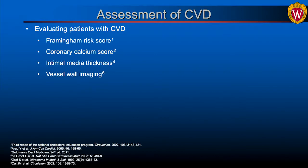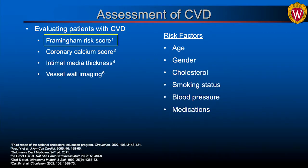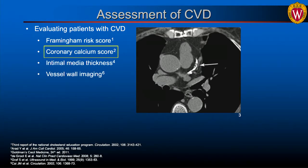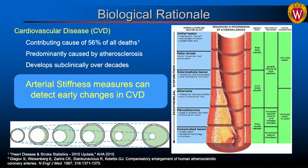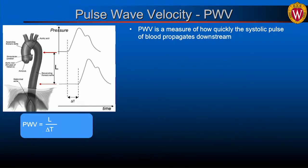We are not that perfect at assessing cardiovascular disease, especially in earlier stages. Common methods include the Framingham risk score, coronary calcium scoring with CT, intima-media thickness, and vessel wall imaging. The premise of arterial stiffness measures is that they can potentially detect earlier changes in cardiovascular disease before geometric changes in the vessel are detectable. The most common measure for assessing arterial stiffness — both with MRI and outside MRI — is pulse wave velocity. The concept is simple: two measurement locations along the aorta yield a pressure or flow waveform.